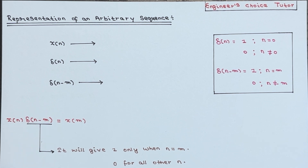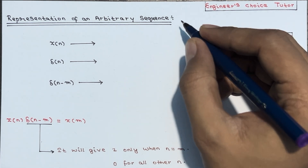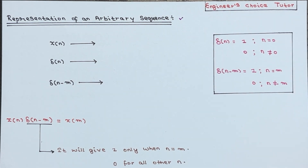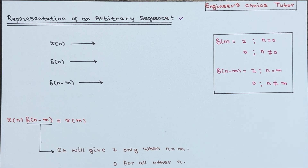Hi everyone. In this lecture we will see the representation of an arbitrary sequence x(n). The representation of any arbitrary sequence x(n) can be achieved through the utilization of delayed and weighted impulse sequence δ(n). This means that a discrete time signal can be represented as a sum of impulses, allowing us to compute the response of an LTI system using discrete convolution.